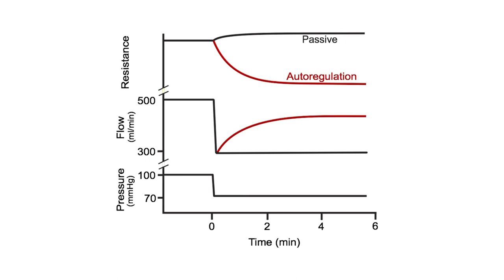Next, we're going to get into autoregulation of organ blood flow. Autoregulation basically describes the ability for an end organ — like the brain or the kidneys — to maintain stable capillary pressures. This may involve a combination of mechanisms, including myogenic responses and metabolic autoregulation like functional sympatholysis. Either way, it's important to understand because it explains the symptoms we see in hypertensive emergencies and also explains how our organs keep blood flow pretty consistent. Typically, organs with high metabolic activity — like the brain and kidneys — have a much higher autoregulatory capacity.